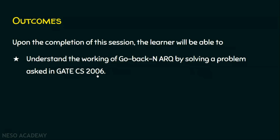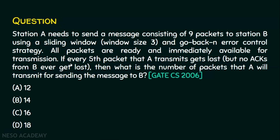Let's go into the problem now. Station A needs to send a message consisting of nine packets to station B, using a sliding window of window size 3 and Go-Back-N error control strategy. All packets are ready and immediately available for transmission. If every fifth packet that A transmits gets lost, but no acknowledgements from B ever get lost, then what is the number of packets that A will transmit for sending the message to B?